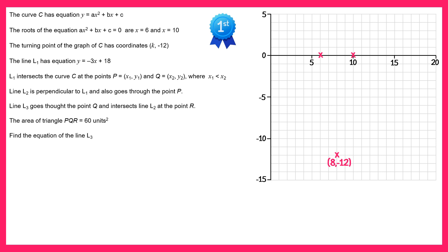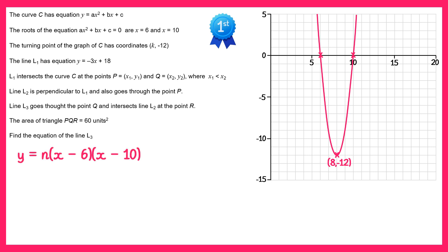We can now sketch a quadratic curve that goes through all of those points, but we still don't know the equation of this curve yet. We know its roots are 6 and 10, so if we factorise it must be of the form (x minus 6)(x minus 10). But there are many different quadratic graphs with that form — we could multiply by any number and it would still have the same two roots. So we write the graph as y equals n times (x minus 6)(x minus 10).